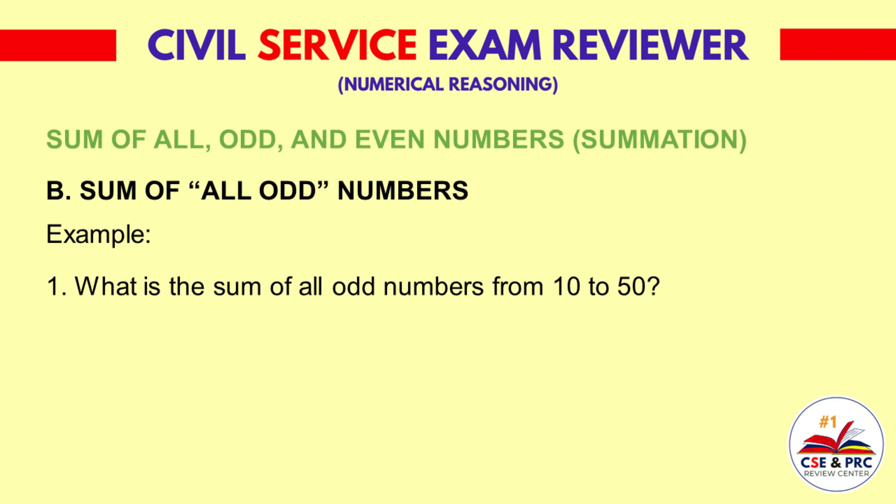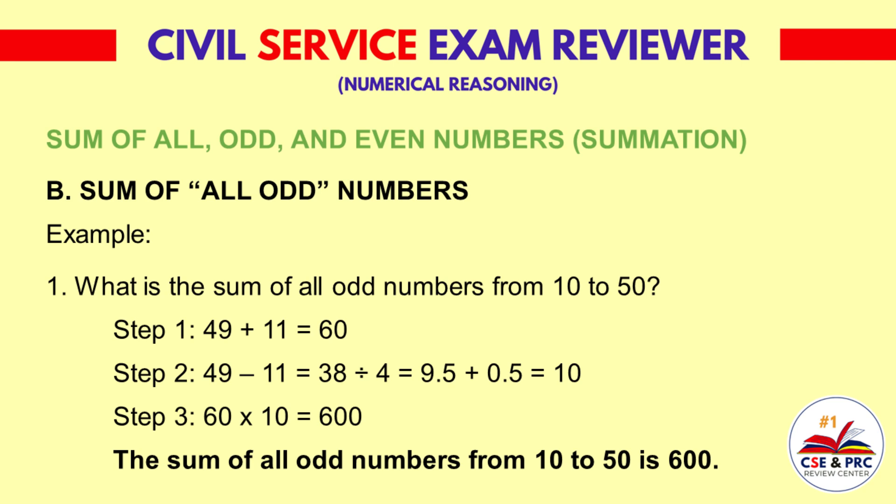Example 1: What is the sum of all odd numbers from 10 to 50? Step 1: Add the biggest odd number and the smallest odd number — 49 plus 11 is equal to 60. Step 2: Subtract the biggest odd number from the smallest odd number, divide by 4, then add 0.5 — 49 minus 11 equals 38, divided by 4 equals 9.5, plus 0.5 equals 10. Step 3: 60 times 10 is equal to 600. The sum of all odd numbers from 10 to 50 is 600.